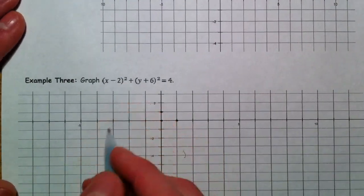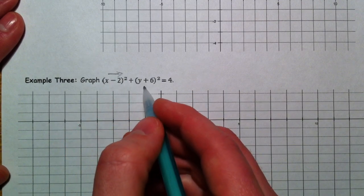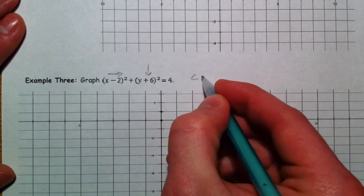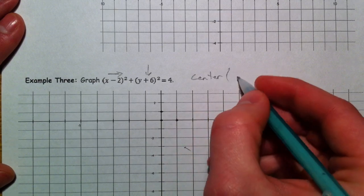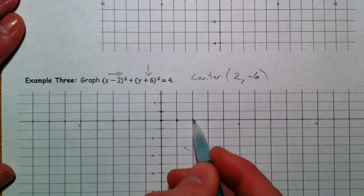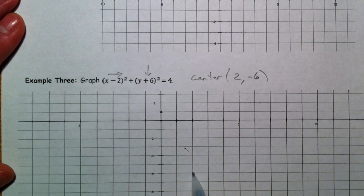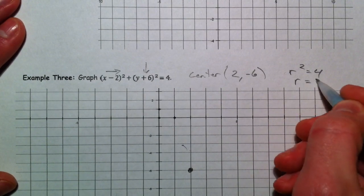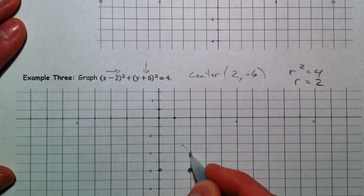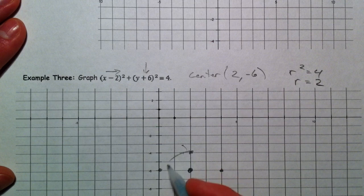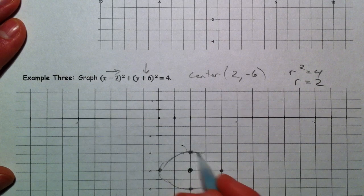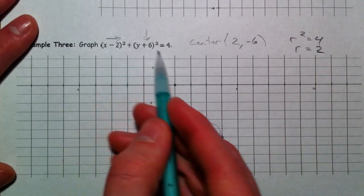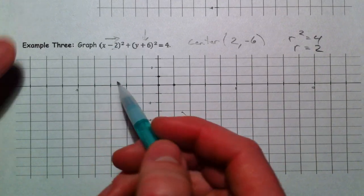x minus 2 shifts it to the right 2. Y plus 6 shifts it opposite, and so it shifts it down 6. And so the center is 2 comma negative 6. So you can go over 2 and down 1, 2, 3, 4, 5, 6. r squared equals 4, so r equals 2. So you can go to the right, to the left, up 2, and down 2. Again, this is a little more of a rectangular grid, and so it's going to look a little more ovally than it needs to. But there's your circle. Plot your center first, opposite opposite, and then go on down.